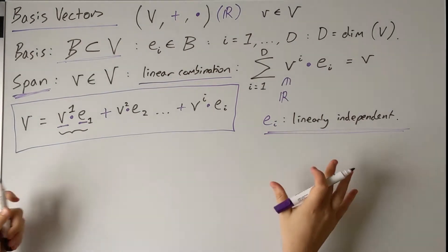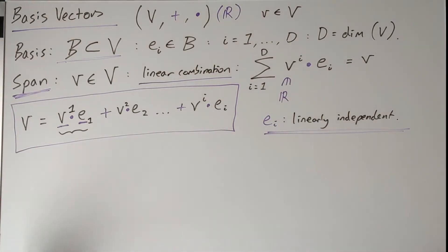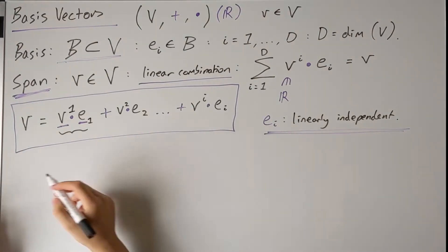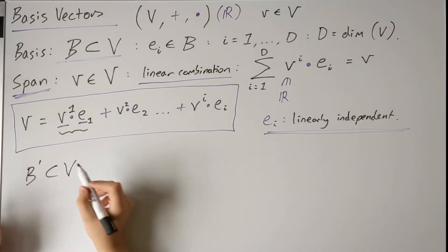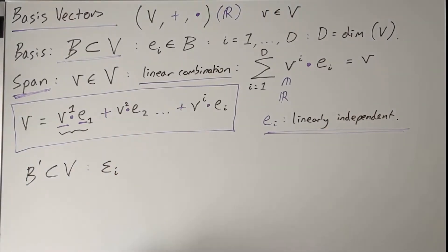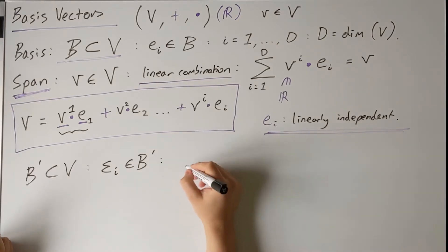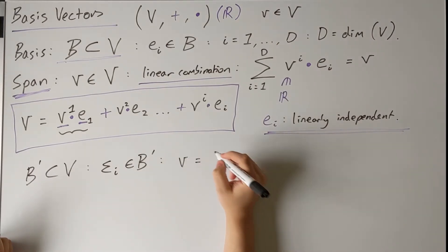So now a key point is that this basis that we've found doesn't have to be unique. We could have other bases, say B prime, which is a subset of V with the elements epsilon_i say. Then, just as equally, we could express v in terms of this new basis, this epsilon basis.